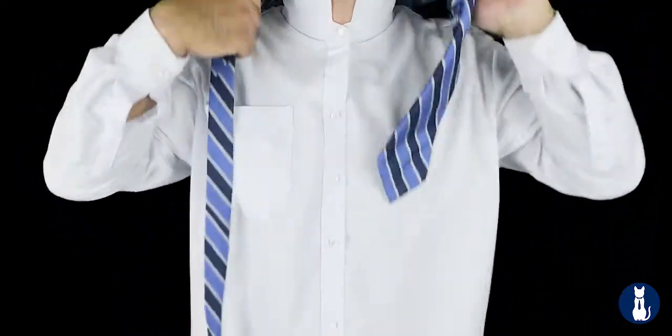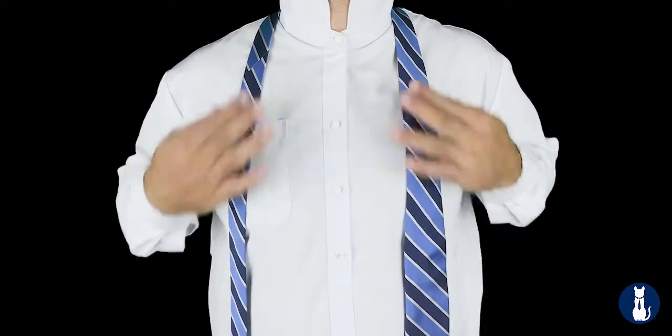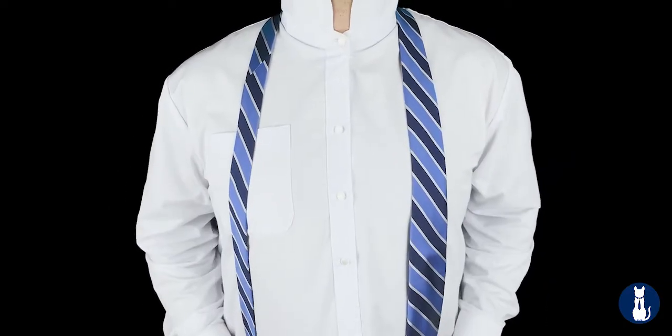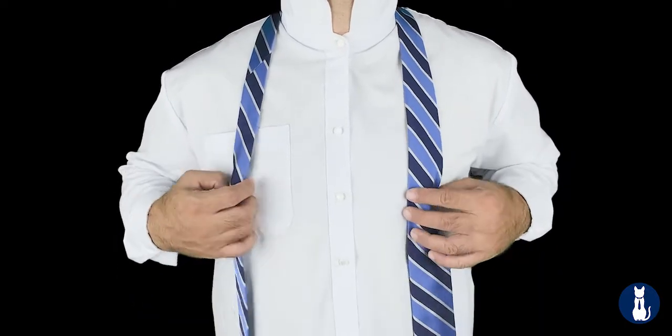Take your tie and with the seam side down, place it around your neck flat against your body. At this point we're going to adjust for length.